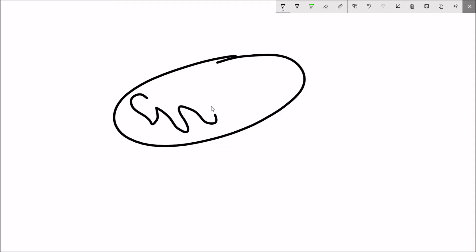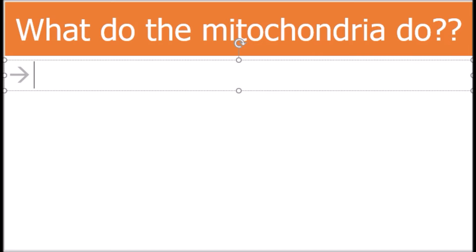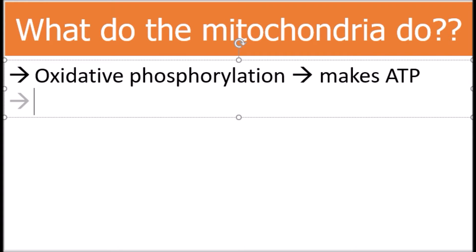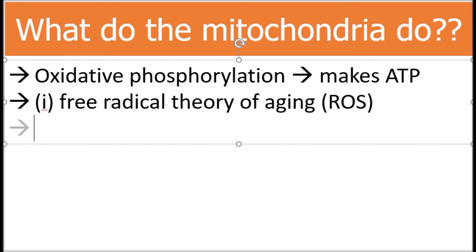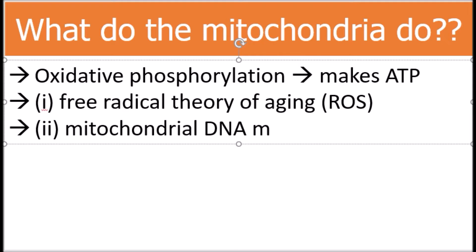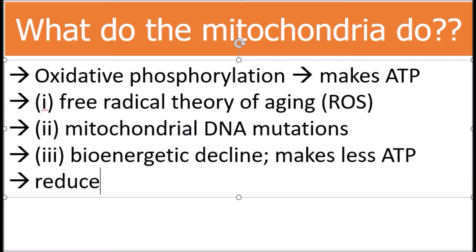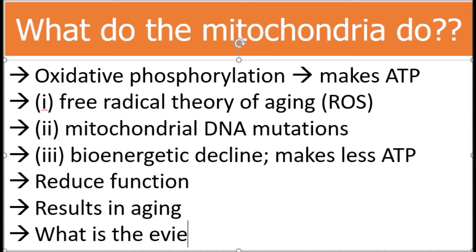Next up is mitochondrial dysregulation. To understand its involvement in aging, we first need to ask what the mitochondria do. Mitochondria are organelles that carry out oxidative phosphorylation to produce ATP — the energy source for the cell. There are three categories by which dysregulation of the mitochondria could contribute to aging: the free radical theory of aging related to reactive oxygen species (ROS); the accumulation of DNA mutations in the mitochondrial DNA; and bioenergetic decline — over time the mitochondria produce less ATP, reducing cellular energy and function.